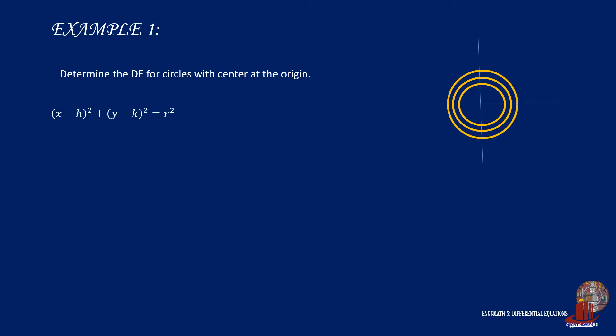The standard formula for a circle is x minus h squared plus y minus k squared is equal to r squared. In this situation, h and k would be 0 as the center is at the origin. So by modifying the equation, we get x squared plus y squared is equal to r squared.